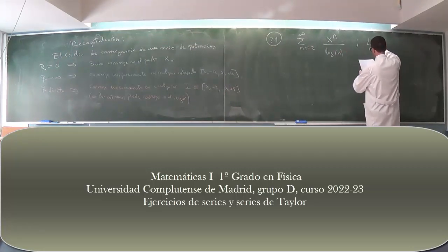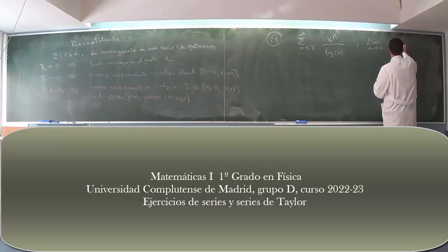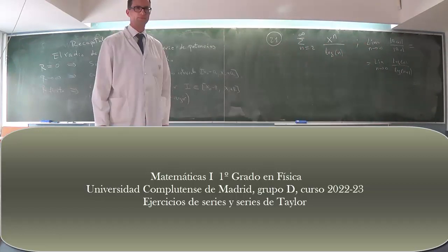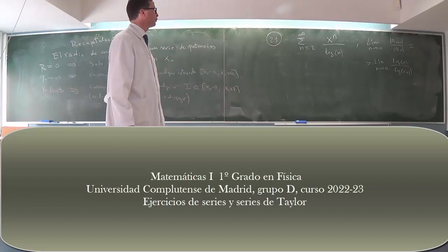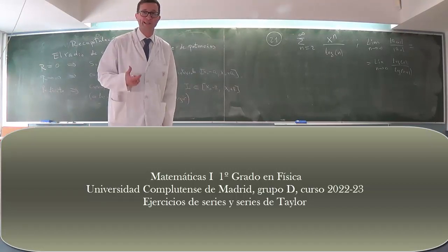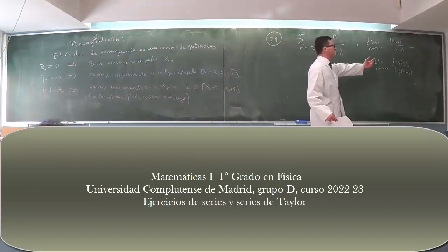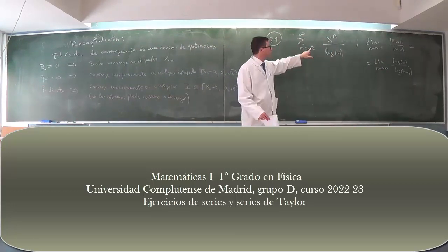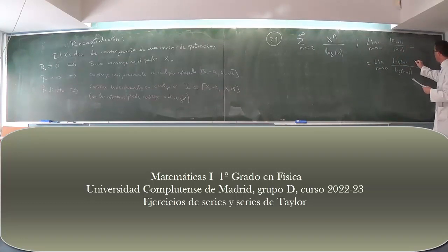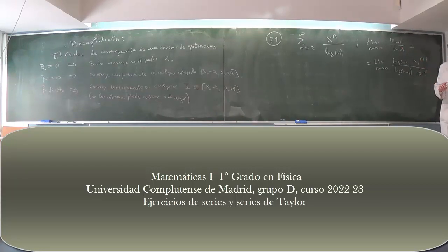Aplicamos el criterio del cociente: límite cuando n tiende a infinito de a_{n+1} entre a_n. La fórmula debe incluir la x; a_n es todo el término, no solo el coeficiente. Entonces tenemos x elevado a n+1 en el numerador y x elevado a n en el denominador, junto con los logaritmos correspondientes.